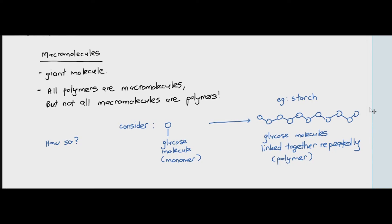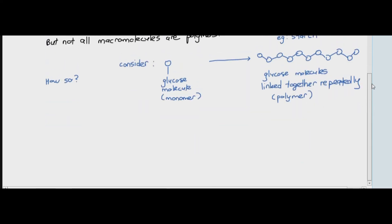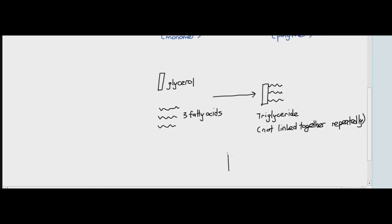Now, consider glycerol and fatty acids. Glycerol and fatty acids will be part of lipids. And when you join the glycerol and fatty acids together, what you get is a molecule known as triglyceride. But here's the thing. This triglyceride is not linked together repeatedly. It's just one glycerol with three fatty acids. That's about it.